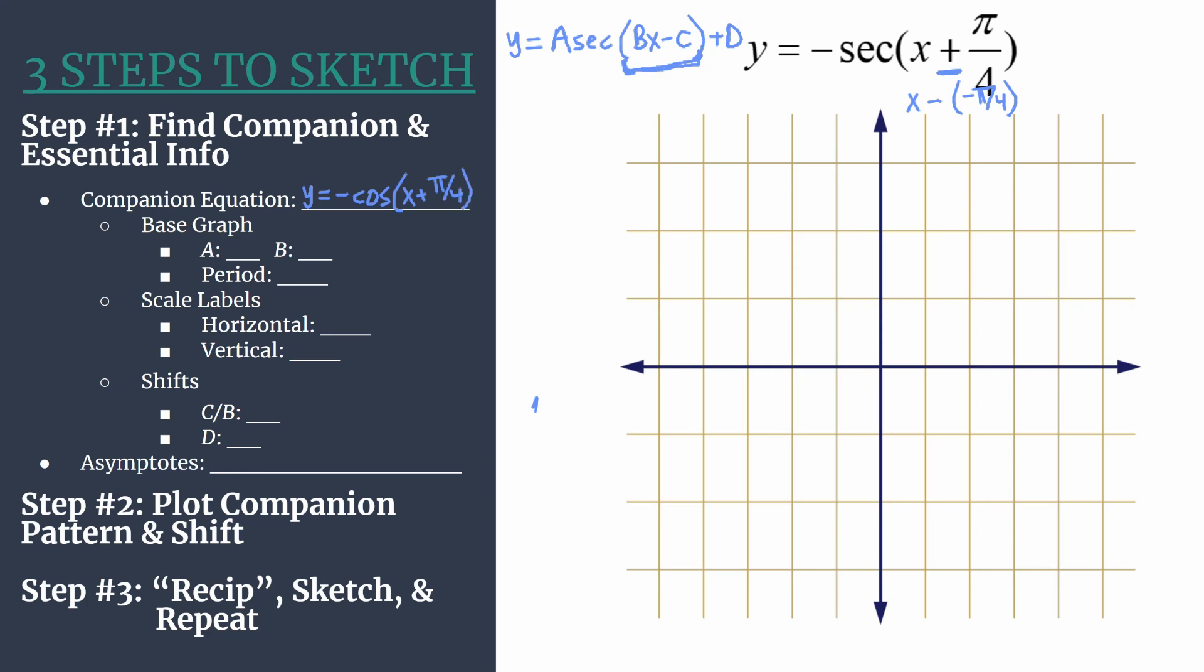Some quick analysis here for our base graph. This is our companion graph. A is the leading coefficient, so that's an understood negative 1. When I see a negative value for A, I like to go ahead and put a star down in step 2.